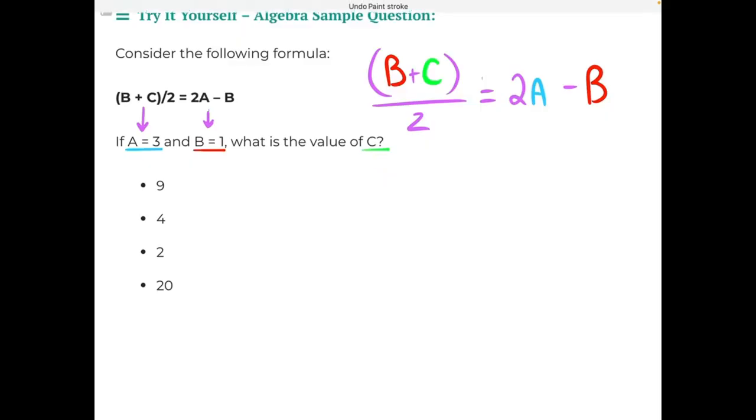Let's start by doing some substitutions. From left to right, B is going to equal 1. So we'll have (1 + C)/2 equals 2 times 3, because A equals 3, minus B equals 1.